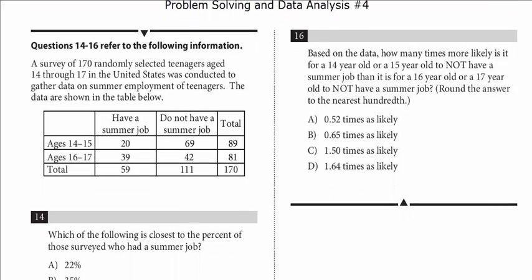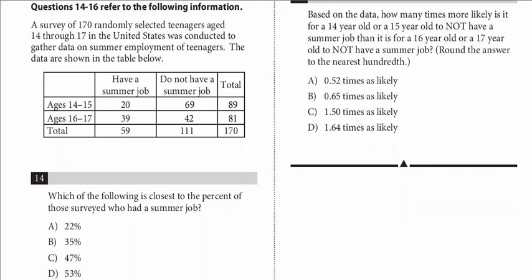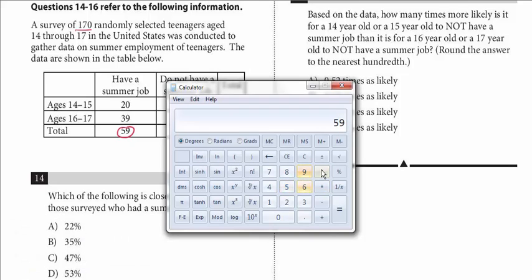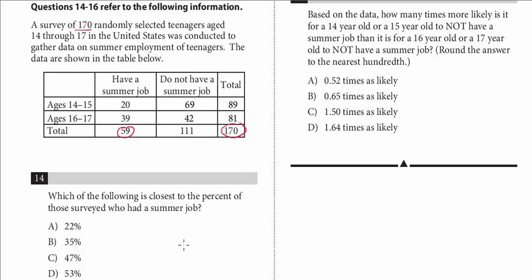Let's take a look at the first question relating to this table. Which of the following is the closest to the percent of those surveyed who had a summer job? So those surveyed who had a job - it's not distinguishing between the different ages, it's the total in the survey. We know there's 170. We want the percent who had a job. So the ones who had a job would be this. So again, this is calculator permitted, and so it's just going to be 59 divided by 170. And that is 34.7% and the closest one to that is B.